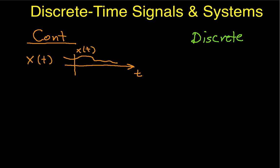A discrete time system, on the other hand, we denote as x, which is a function of n, where n is an integer. It's not a real valued variable, but it's an integer.